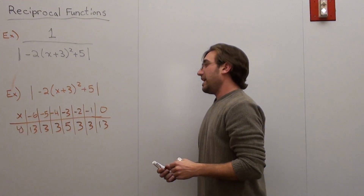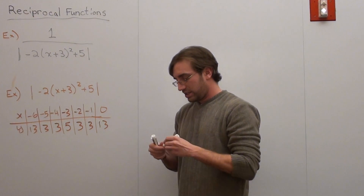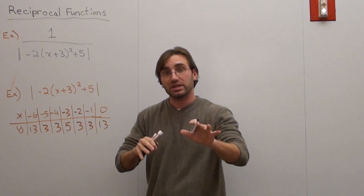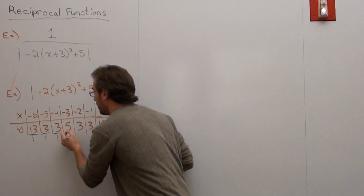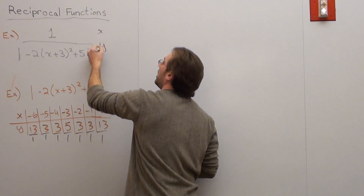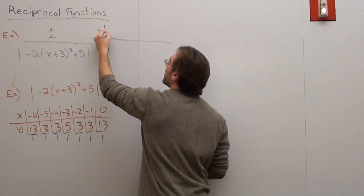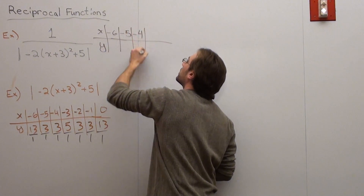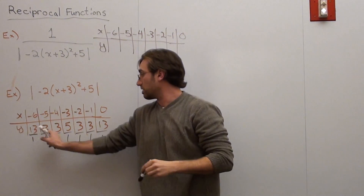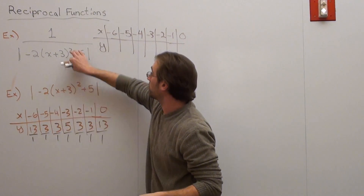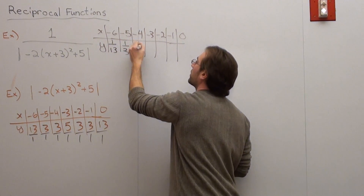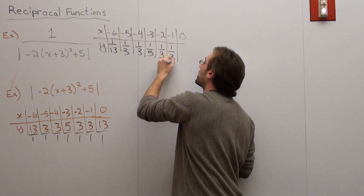So the y-values are 13, 3, 3, 5, 3, 3, 13. Here's the relation — this is 13 over 1, 3 over 1, 3 over 1, 5 over 1, 3 over 1, 3 over 1, 13 over 1. Since the original function and the reciprocal are reciprocals of each other, the y-values for the reciprocal graph are just 1/13, 1/3, 1/3, 1/5, 1/3, 1/3, 1/13, for x-values negative 6, negative 5, negative 4, negative 3, negative 2, negative 1, and 0.